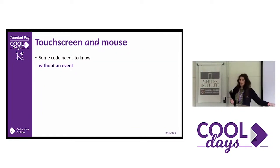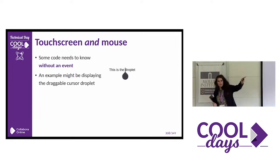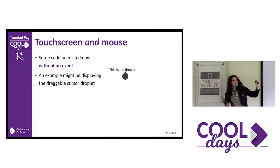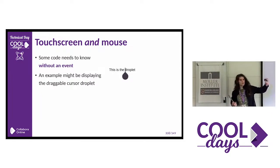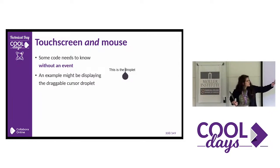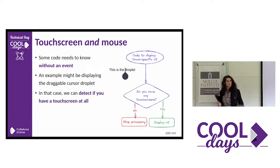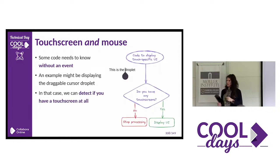Some code needs to know the input type without an event — for example, the cursor drag handle. If you're selecting text on a touchscreen, you want to see that handle so you can drag it to move the text selection. In that case, we can detect if you have a touchscreen attached to your system.